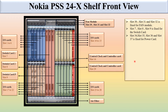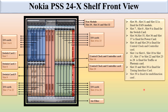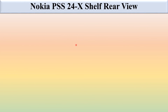Slots 16 and 29 are fixed for the central clock and controller card. The remaining slots are fixed for the input/output card, also called the universal card or photonic card. Slots 33 and 38 are fixed for the timing interface card, visible in the rear view. Slot 39 is fixed for the multi-function card.